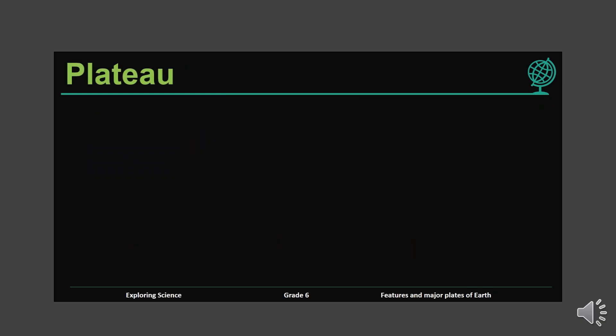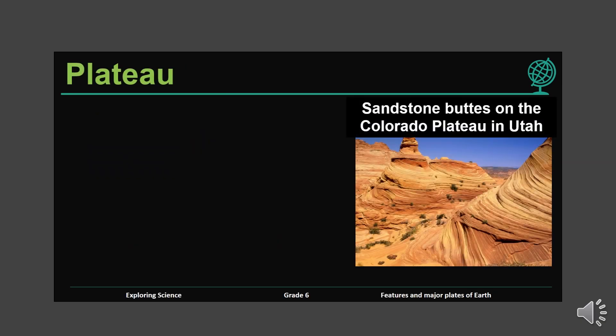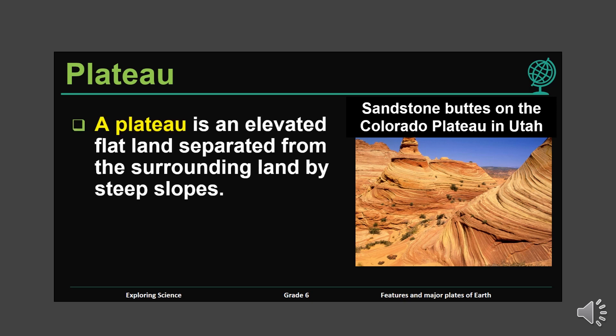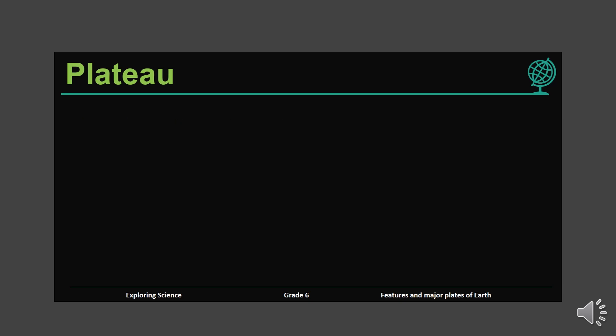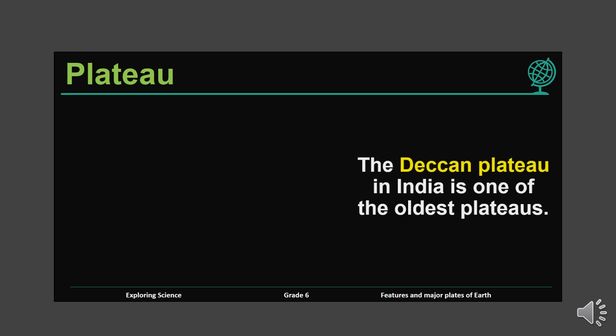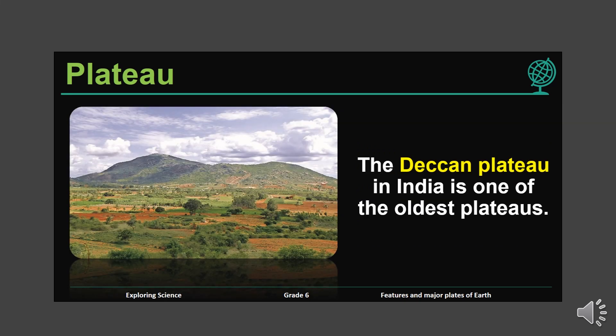Plateau. This is the plateau in Colorado. A plateau is an elevated flat land separated from the surrounding land by steep slopes. If there is a steep slope, water will not collect easily, so it is ideal for plants that do not need much water. The Deccan plateau in India is one of the oldest plateaus.